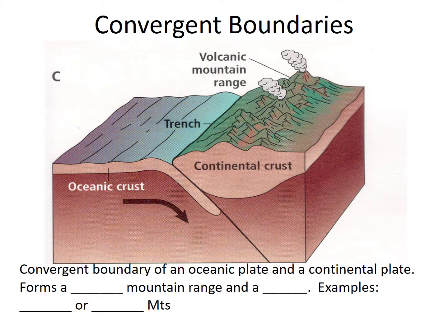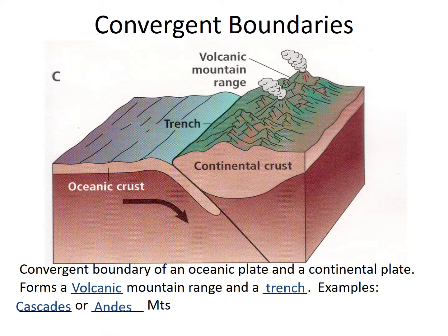A convergent boundary of an oceanic plate and a continental plate forms a volcanic mountain range and a trench. Examples include the Cascades Mountains, the Andes Mountains in South America, and where the Juan de Fuca plate is converging with the continental crust.